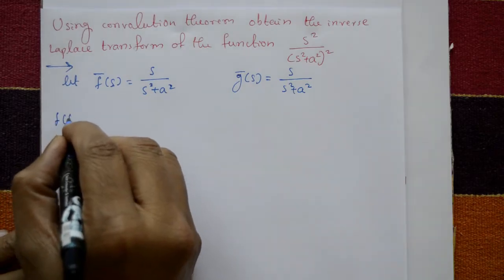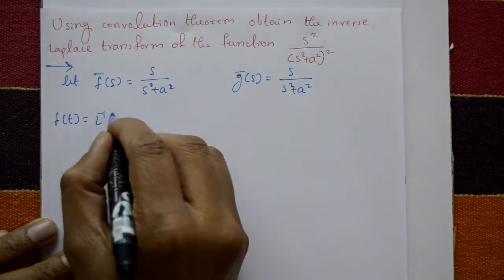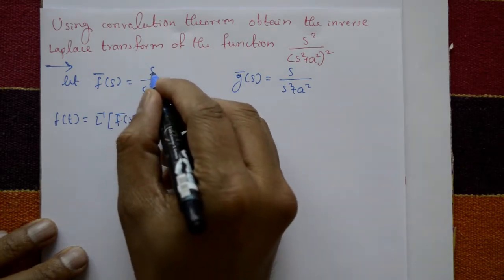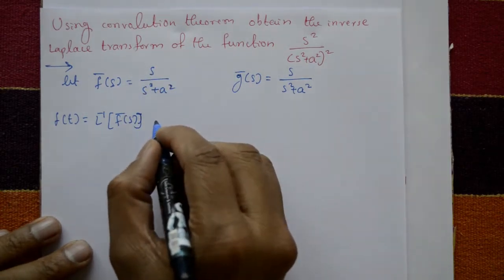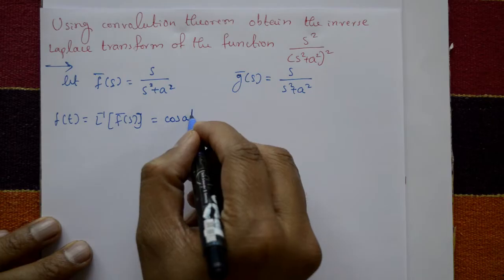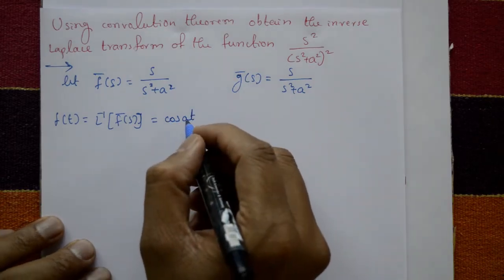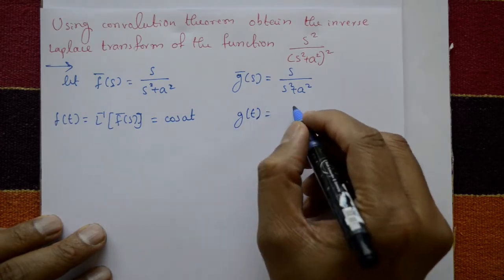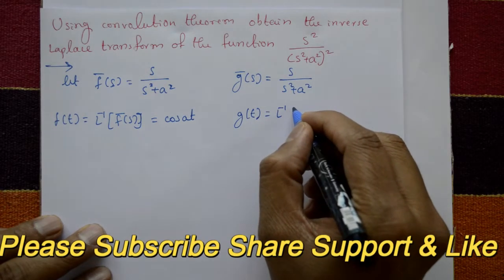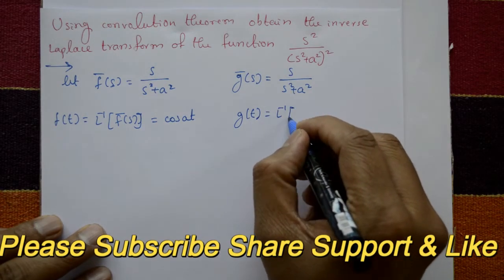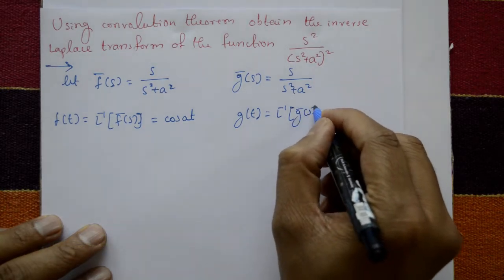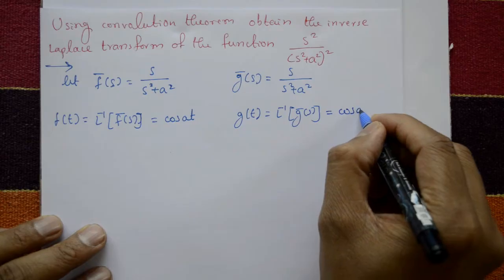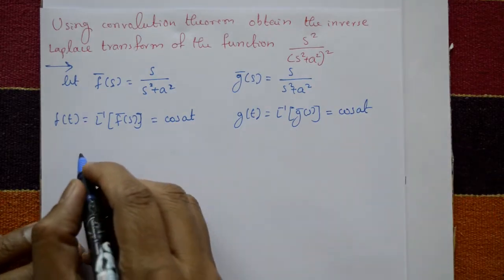Now f(t) means inverse of F̄(s). The inverse of s upon (s² + a²) is a standard result: cos(at). Similarly, g(t), the inverse of Ḡ(s), which is s upon (s² + a²), is again cos(at).